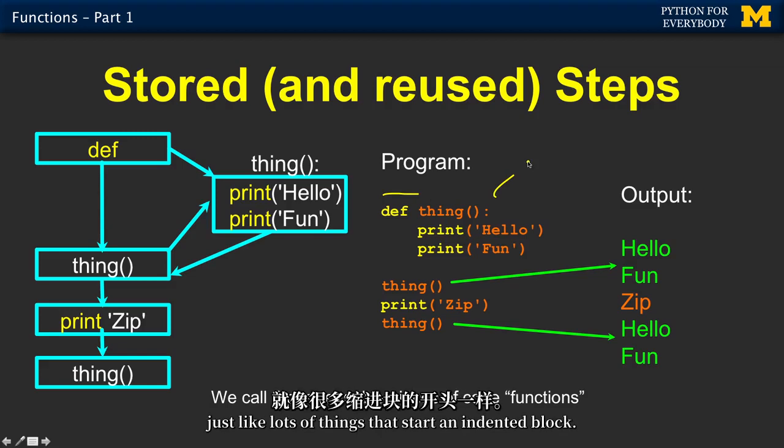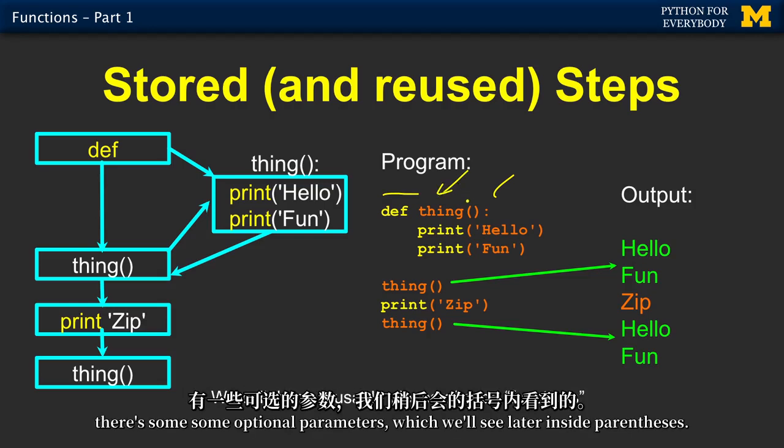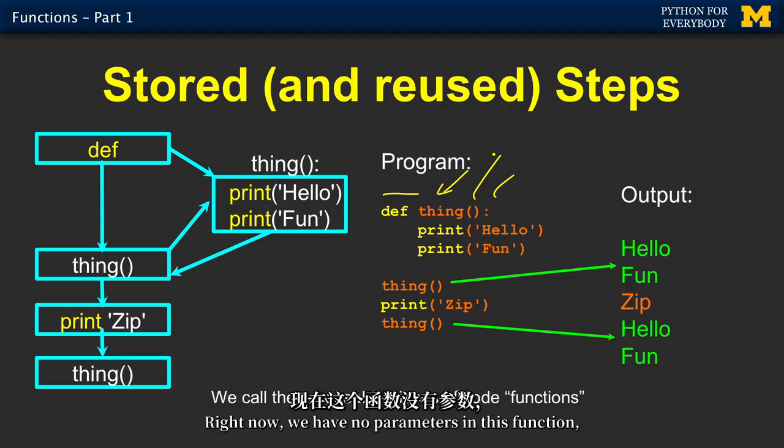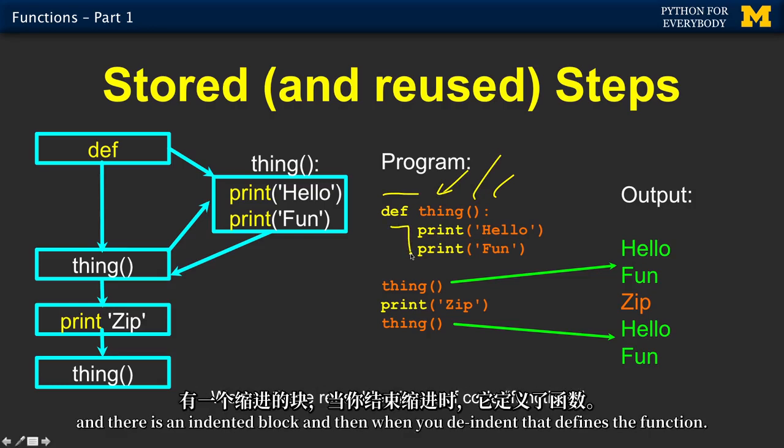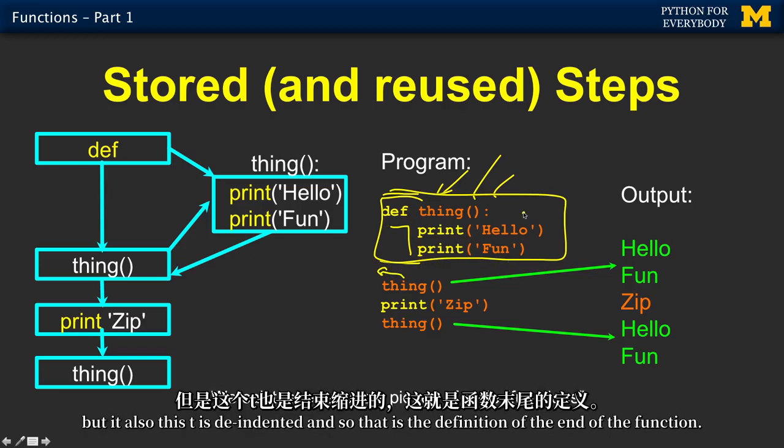It ends in a colon, just like lots of things that start an indented block. You get to name the thing that you're storing. I call it thing for now. And there's some optional parameters, which we'll see later inside parentheses. Right now we have no parameters in this function. And then there is an indented block. And then when you de-indent, that defines the function. So this thing has been de-indented, and so that is the definition of the end of the function.